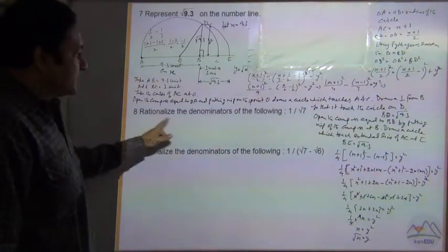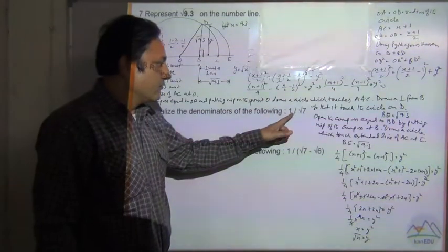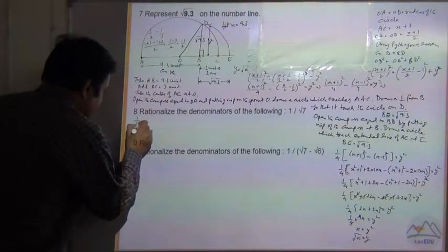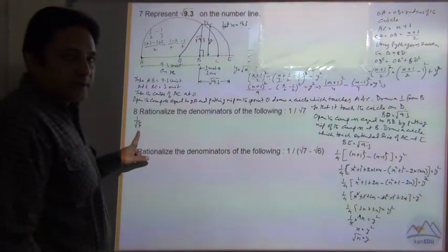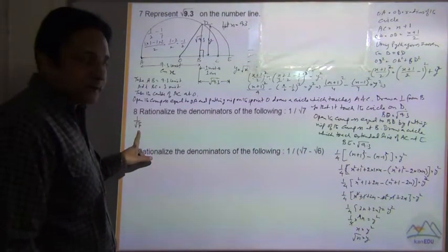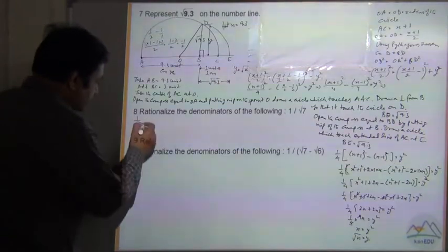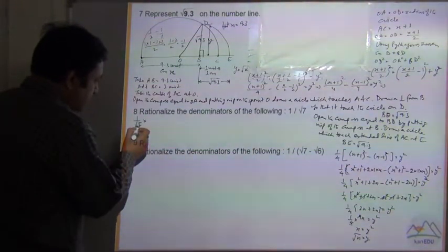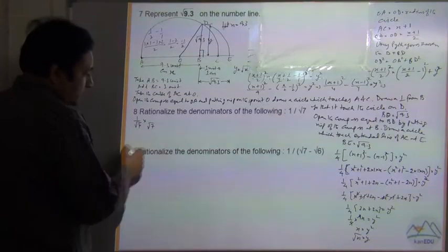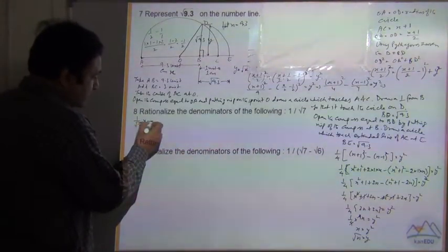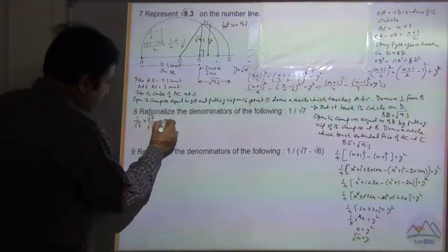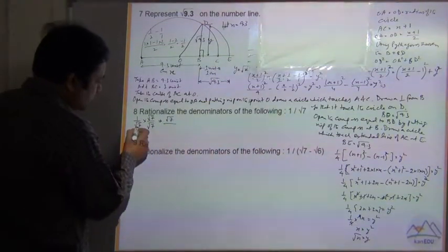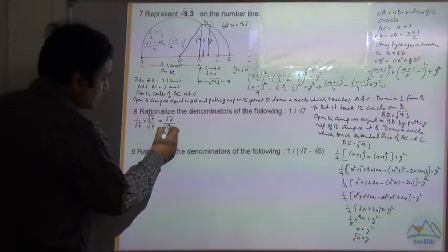Next question: rationalize the denominator of 1 by root 7. Since under root 7 is an irrational number, to rationalize we multiply both numerator and denominator by root 7. Numerator multiplied by numerator, denominator multiplied by denominator — so root 7 multiplied by root 7 is equal to 7.